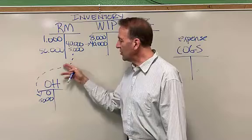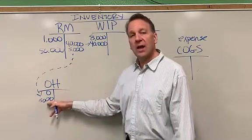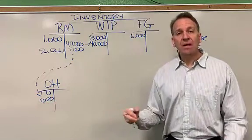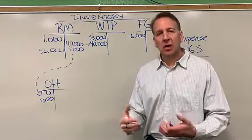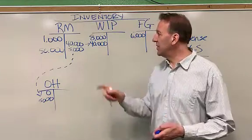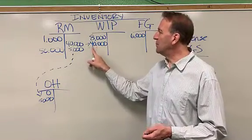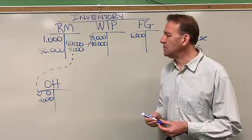It would move into overhead if they're indirect, meaning they don't go directly into the product. They're hard to measure. These are easy to measure items that move right into our product.